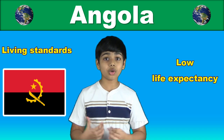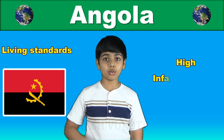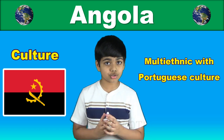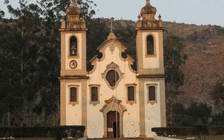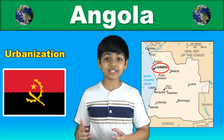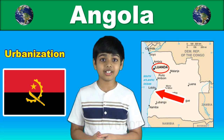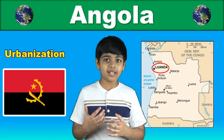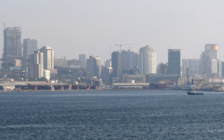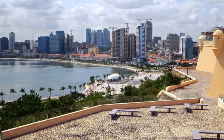The standard of living remains low for most of the population. The life expectancy in the country is one of the lowest in the world, and the infant mortality rate is one of the highest. Angola is a multi-ethnic country, and its culture reflects centuries of Portuguese rule through the predominance of the Portuguese language and the Catholic Church. Most people live in the western half of the country, near the coastline, particularly in the capital of Luanda.